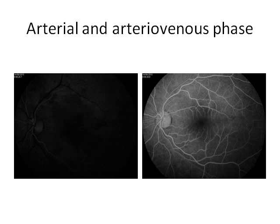Within 1 to 3 seconds after choroidal fluorescence, the central retinal artery begins to fill with the dye. The fluorescence flows into the retinal arteries, then into the pre-capillary arterioles, the capillaries, the post-capillary venules, and finally the retinal veins. Because the fluorescence from the venules enters the veins along their walls, the flow in the veins is laminar. The vascular flow in the center is darker because this is non-fluorescent blood which comes from the periphery and takes longer to fluoresce.